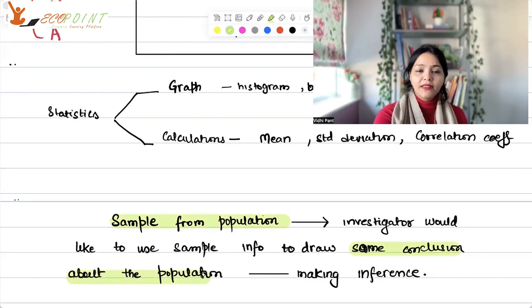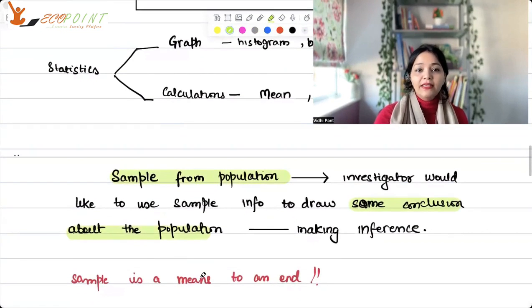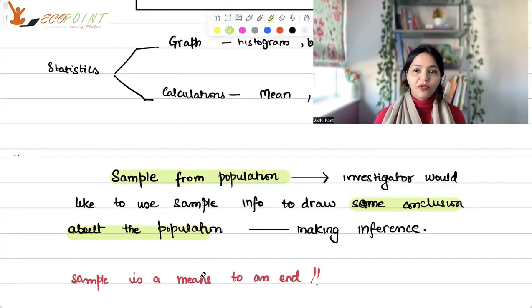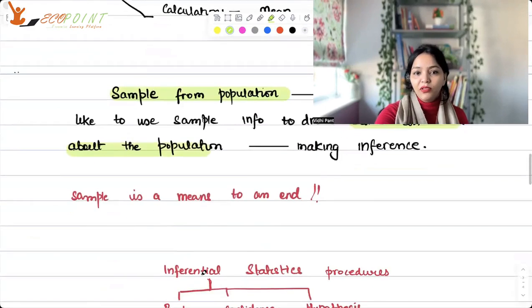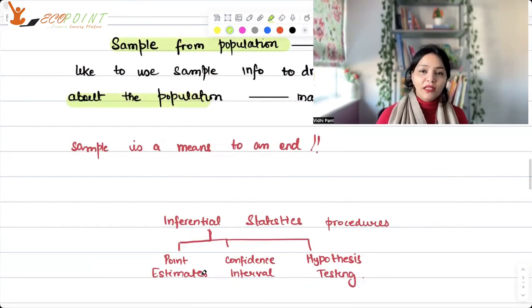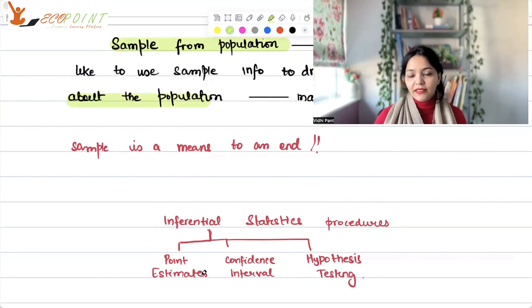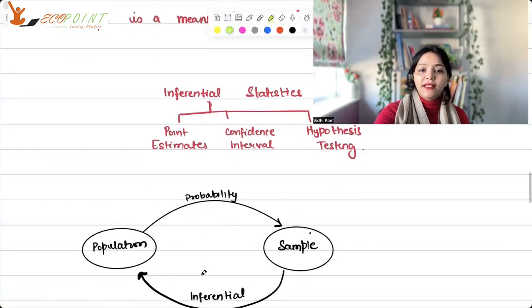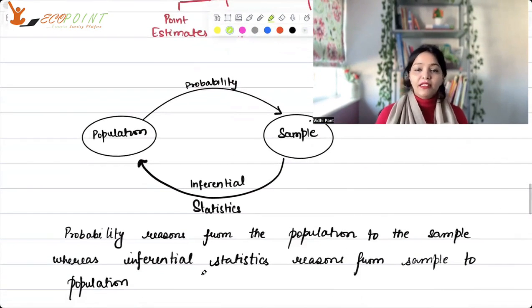So what essentially we are doing? We are taking sample from the population. The investigator would like to use the sample information to draw some conclusions about the population. And that is what is making an inference, and that is what the entire inferential statistics is all about. Remember that sample is a means to an end. It's not the end in itself. It's just the way for us to be able to make some inferences about the entire population.